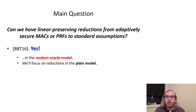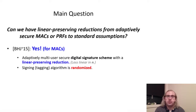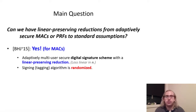Actually, Balare et al. in 2016 answered this question positively by constructing a PRF with a nearly tight reduction. However, their reduction relies on the random oracle model, whereas in our work we will focus on reductions in the plain model. Meanwhile, for MACs in the plain model, Badr et al. answered this question in the positive by constructing an adaptively multi-user secure digital signature scheme with a linear preserving reduction.